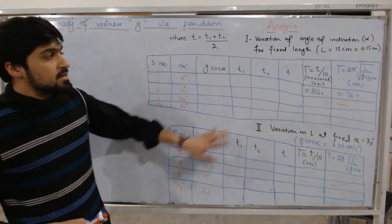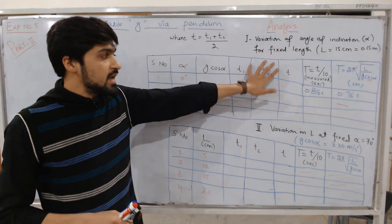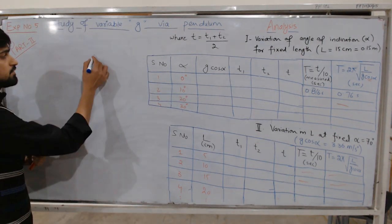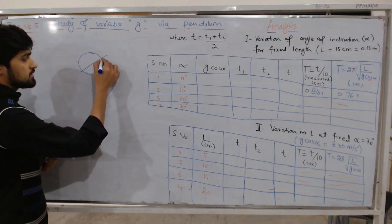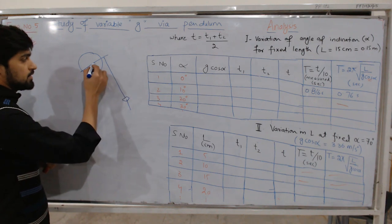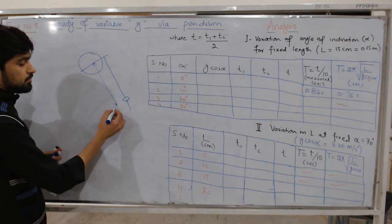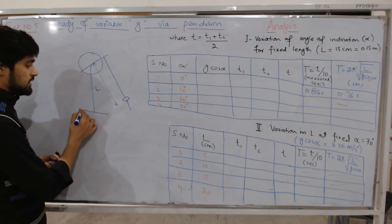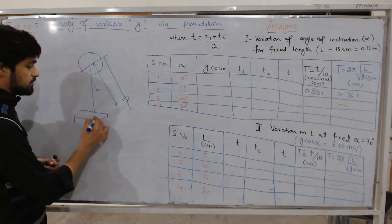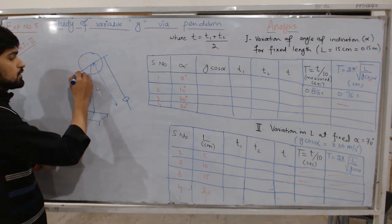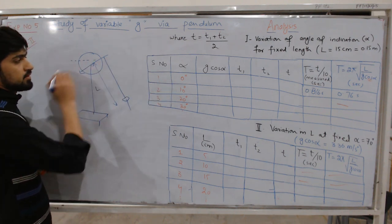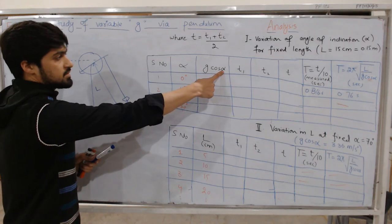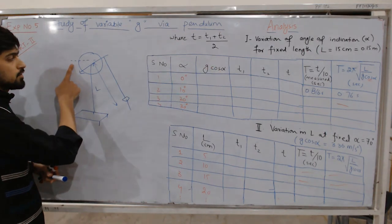That is why I have added certain extra columns — T1, T2, and T. If this is our inclined pendulum, this is the length from the pivot to the center of mass of the metallic disc. In this case we are using a circular metallic disc. This is the length L, and this is our variable g pendulum placed on a horizontal surface. For the first case at 0 degrees, your pendulum acts just like a simple pendulum. You will measure alpha, the value of which can be calculated from the degree scale.